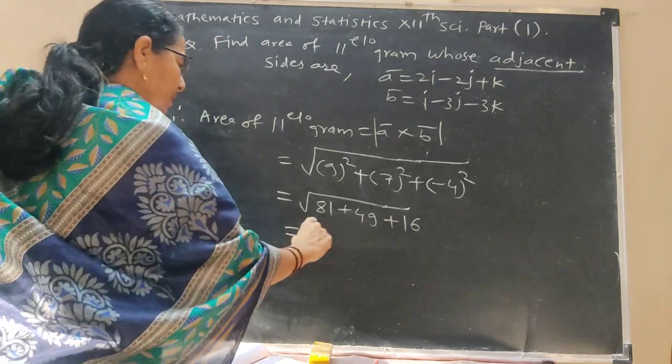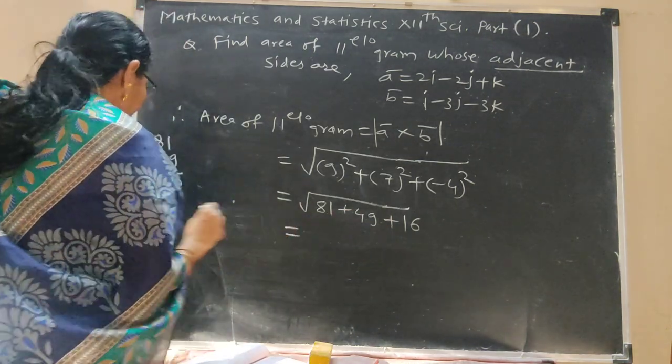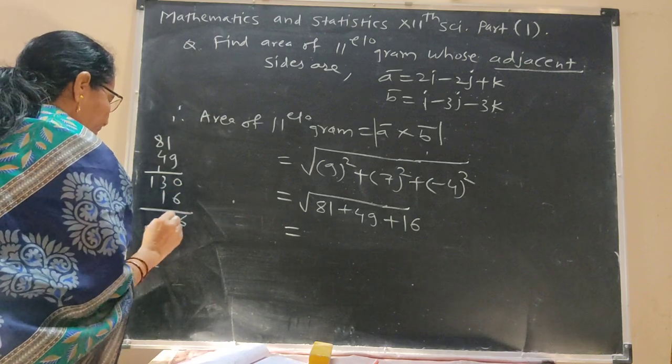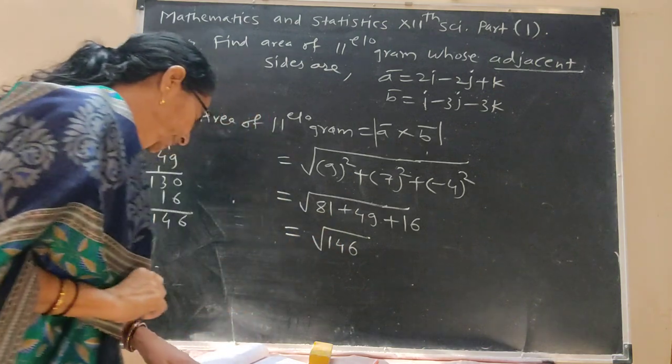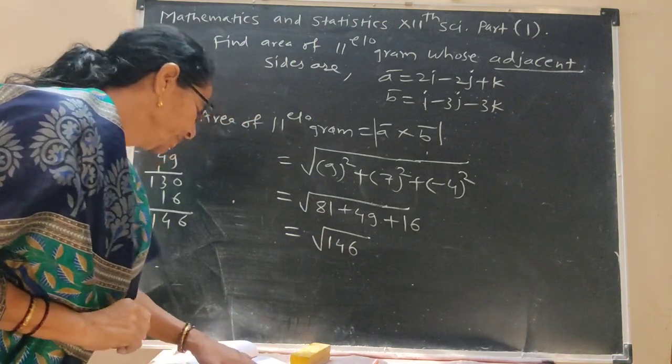81 plus 49 plus 16 equals 146 under root.